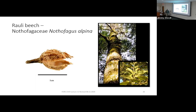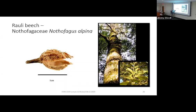One Nothofagaceae species is Rauli beech, Nothofagus alpina. The capsule that holds a few nuts is uncannily similar to American beech fruit — the same capsule-like structure holding a couple of triangular pyramidal small nuts back to back. If you held the fruit from an American beech up to this slide, they look identical — same size, same look, everything very similar.